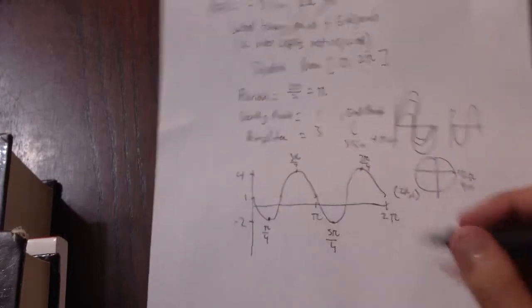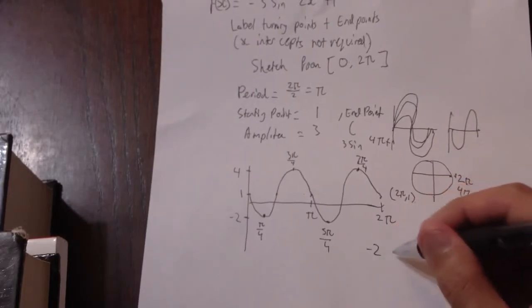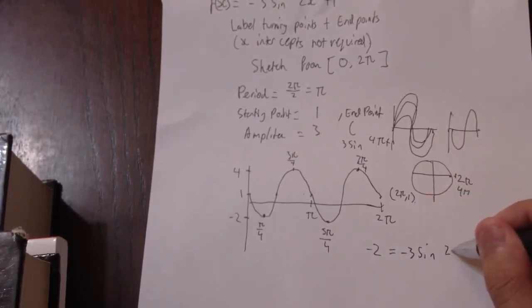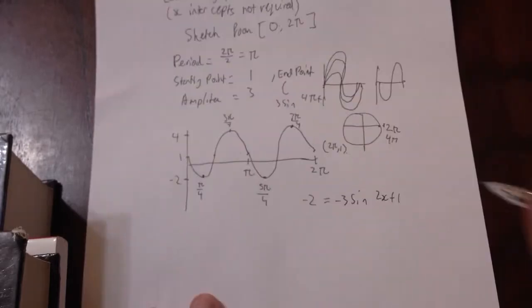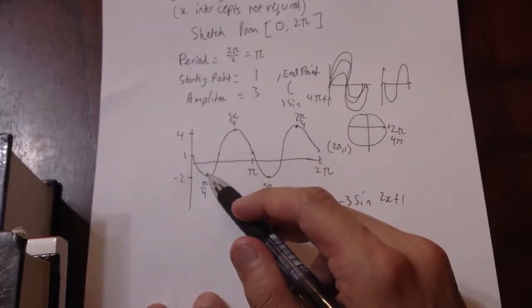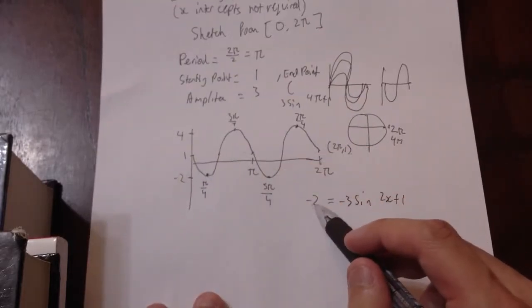If you want to find a proof, let's say minus 2 equals minus 3 sine 2x plus 1. So we're trying to find this point, because this is when y equals minus 2. So I'm setting that as y equals minus 2.